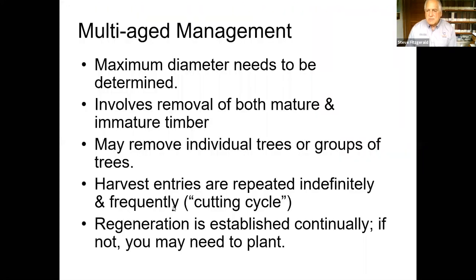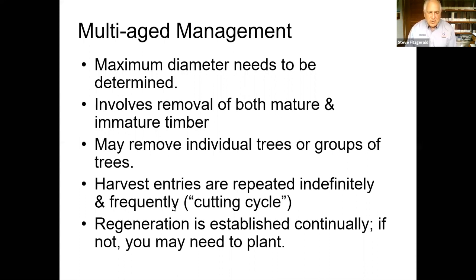A summary of uneven-age management: it involves removal of both mature and immature trees. You can remove trees individually or in groups — groups tend to be easier, particularly for sun-loving trees, and easier to harvest. Harvest entries are frequent — we call that the cutting cycle. The hope is to have regeneration established every time you create an opening and do a harvest entry. It's important that you get regeneration going; otherwise the multi-age, uneven-age system falls apart.